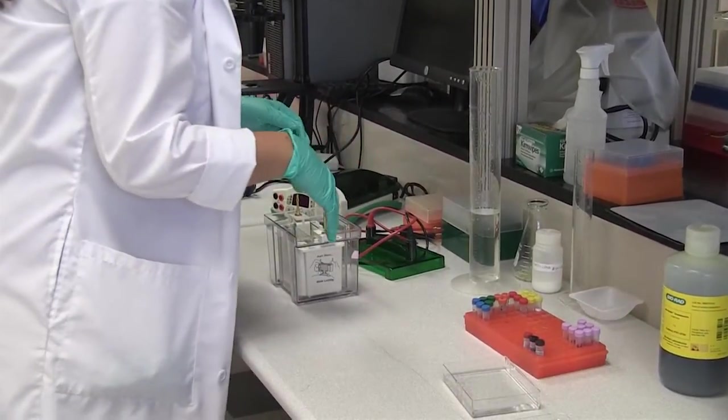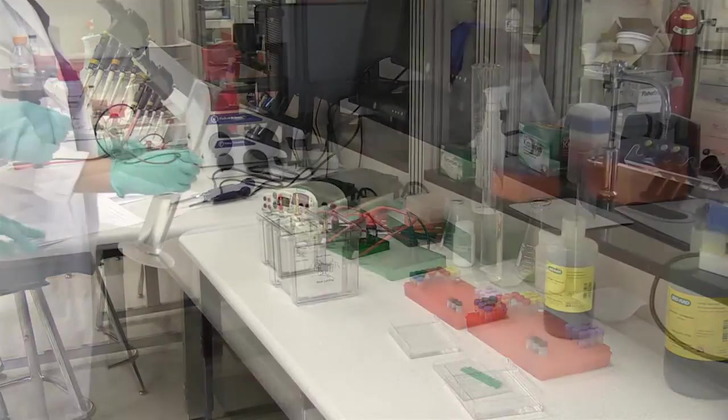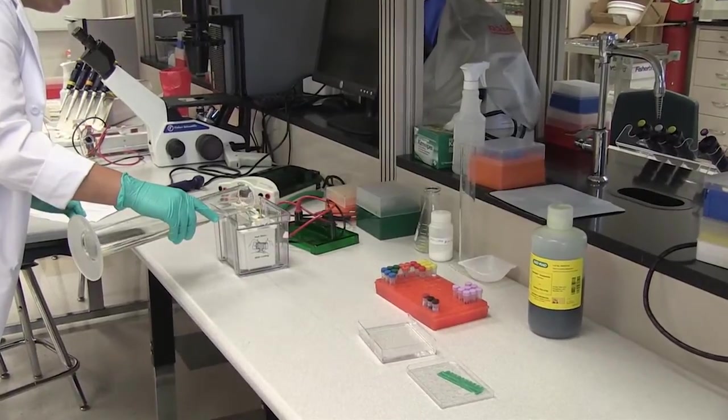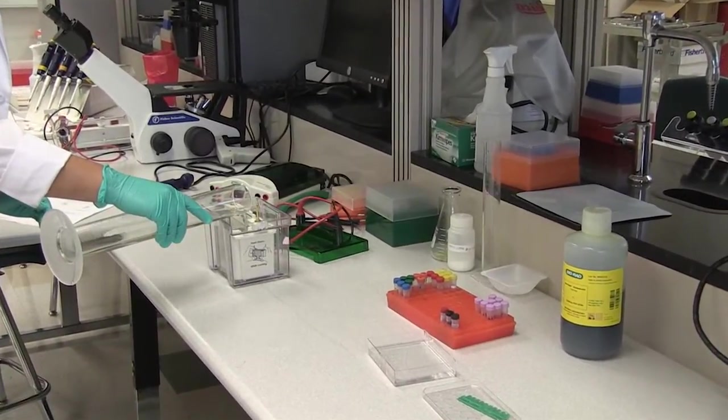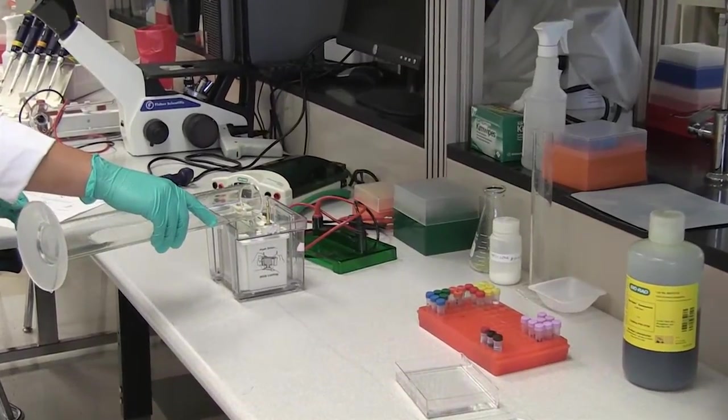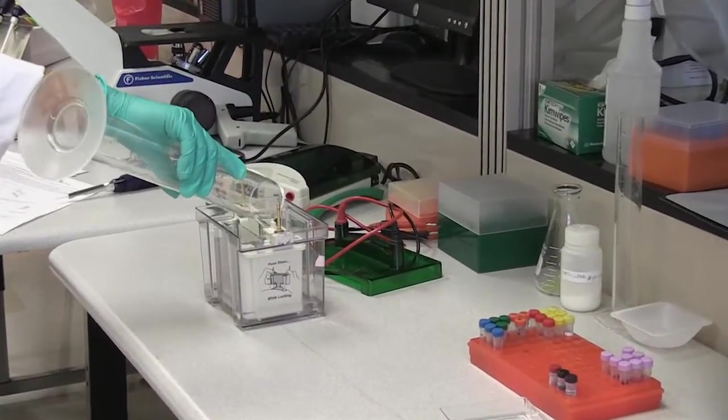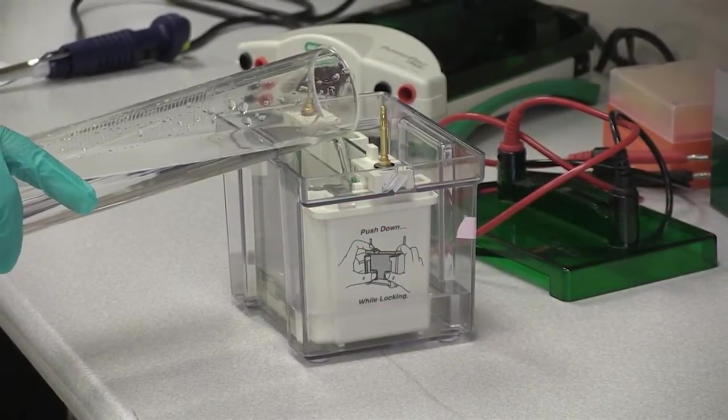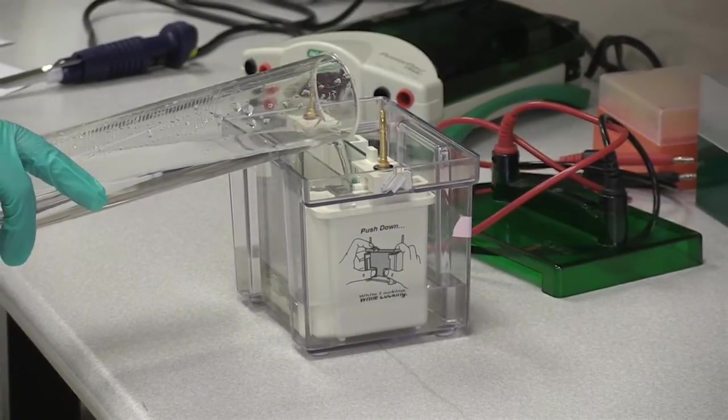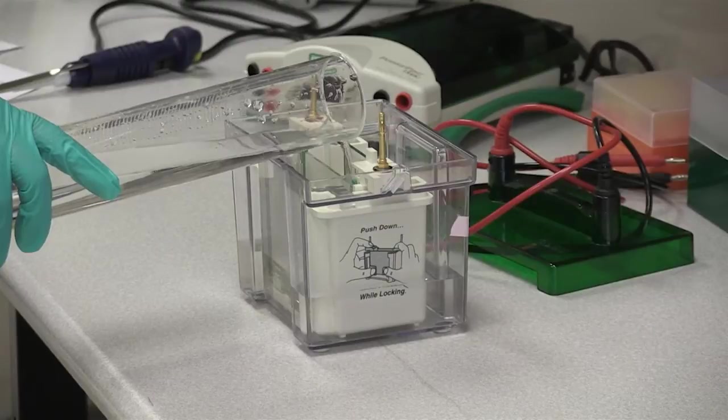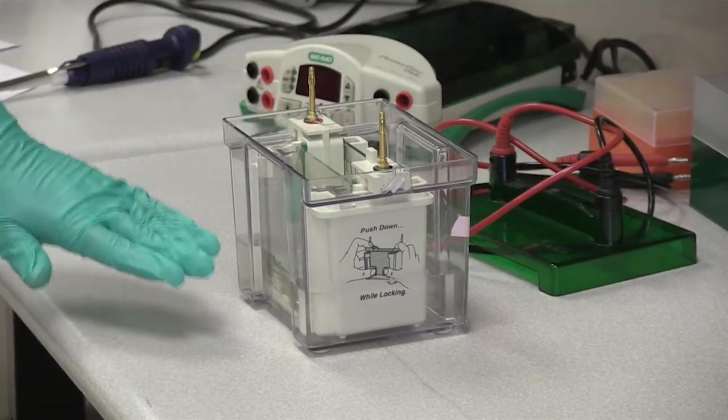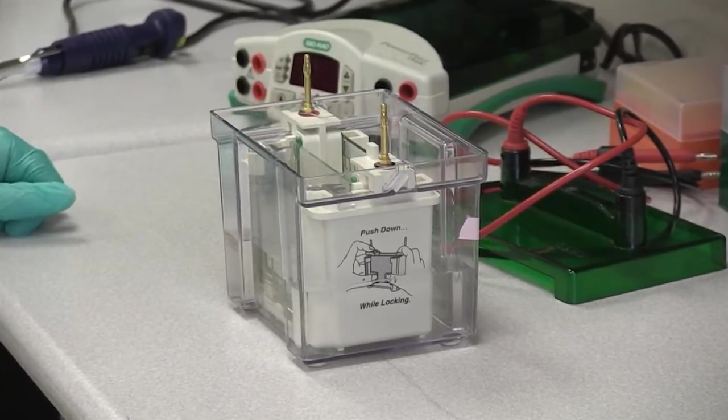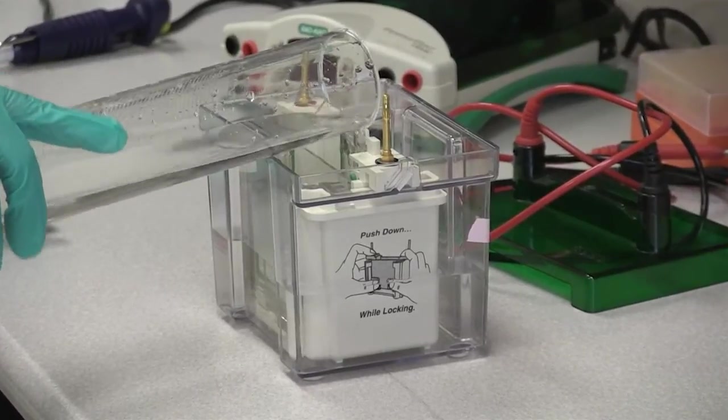Then we need to add our buffer. So the first thing we're going to do is we're going to take our running buffer and we're going to fill the inside chamber. You can see how it leaks out to the outside chamber and that's exactly what we want to have happen. So you want to fill the cassette until the level is about halfway between the top and the bottom of your inner glass. Remember that it is going to equal out. So it feels like you're pouring a lot, but you want to reach a nice equal between the two pieces of glass.